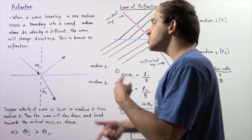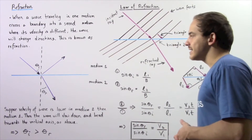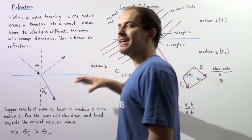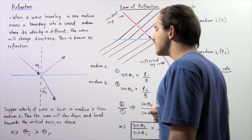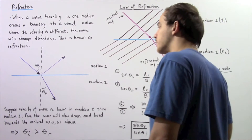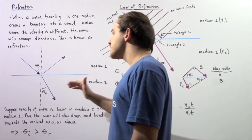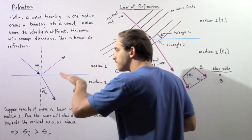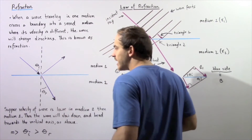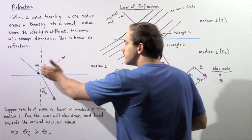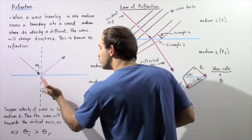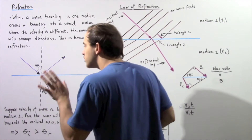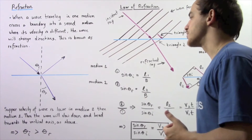Now what if we switch the velocities? If the velocity of the ray in medium one is lower than the velocity in medium two, the opposite occurs. Instead of bending closer to the vertical axis, the ray bends further away from it, and the angle of refraction will be greater than the angle of incidence.